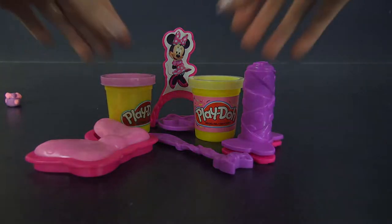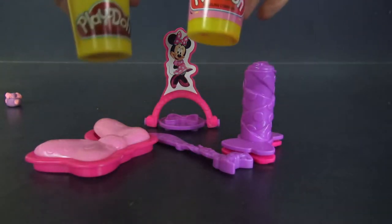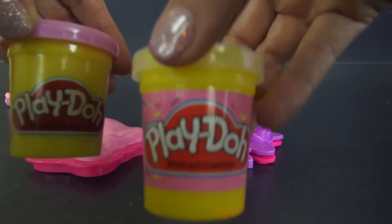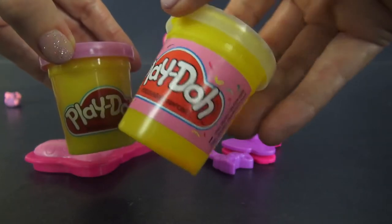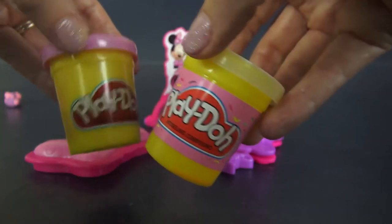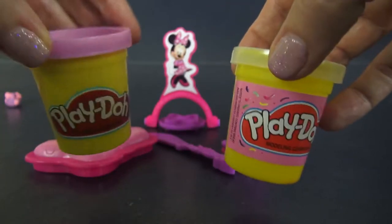So we get two pots of Play-Doh. This one has kind of confetti in it, so that's different. It's pink with other colors and then we have a light purple.